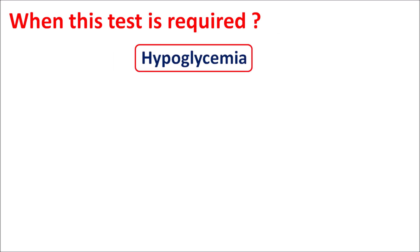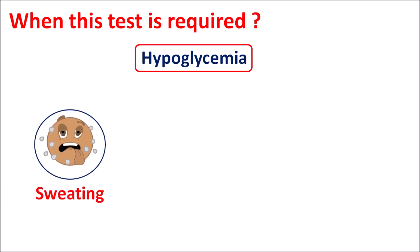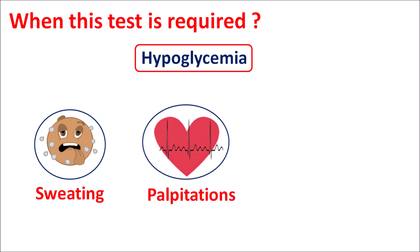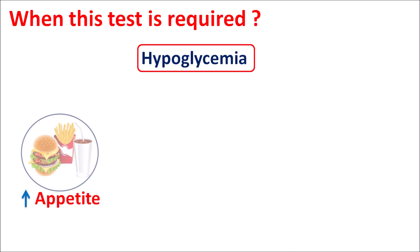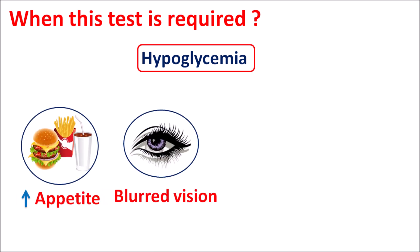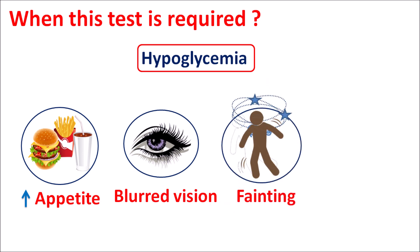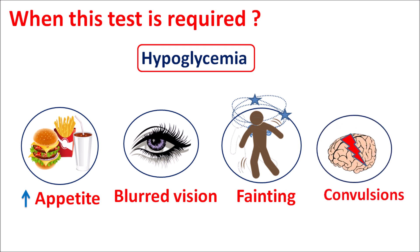Another important condition is hypoglycemia, in which the C-peptide test can be performed. In patients with recurrent hypoglycemia, symptoms include excessive sweating, severe palpitations, awareness of heartbeat, irregular heartbeat, confusion, increased appetite, blurred vision, fainting sensation, and in severe cases, convulsions. When these symptoms occur repeatedly, the C-peptide test can be done to assess insulin levels and to evaluate the action of anti-diabetic agents.